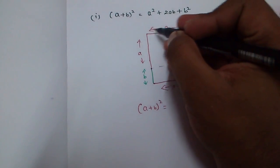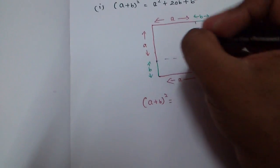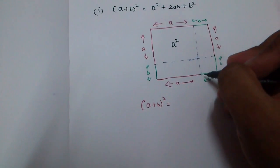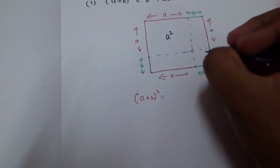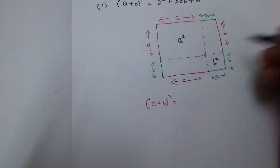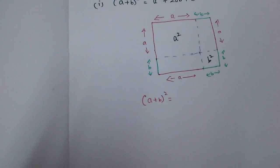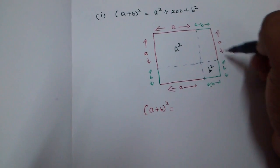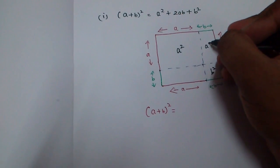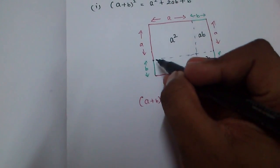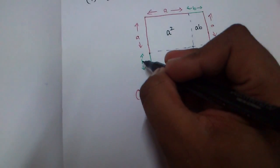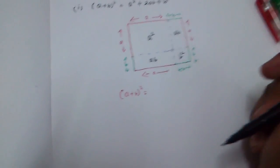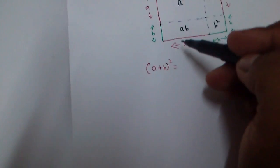The first square has side a, so its area is a². The second square has side B, so its area is b². Here we have a rectangle with length B and breadth a, so its area is aB. Similarly, there is another rectangle with length a and breadth B, giving an area of aB.